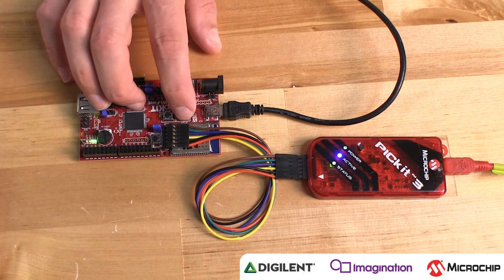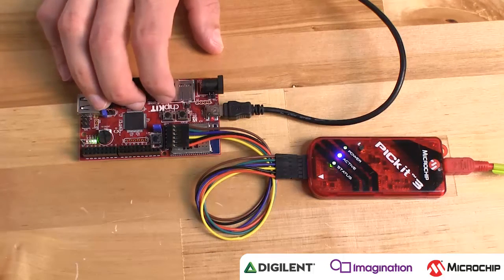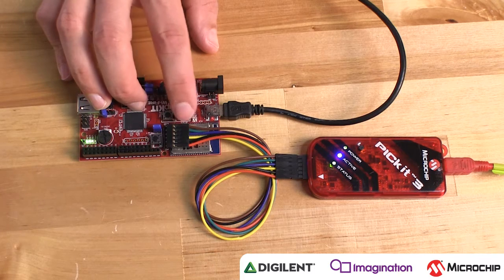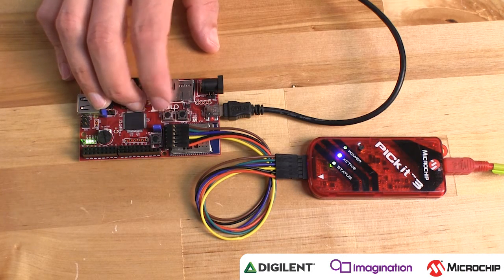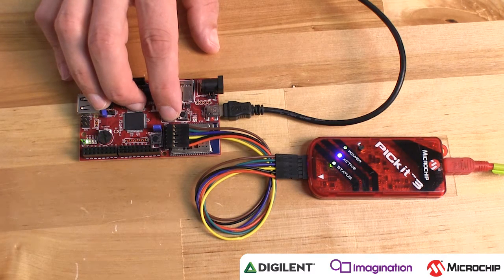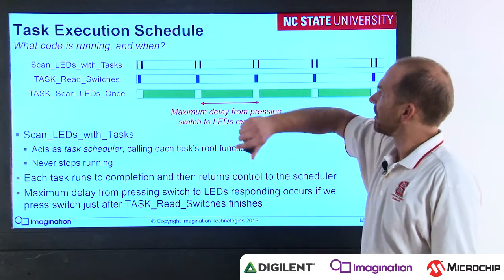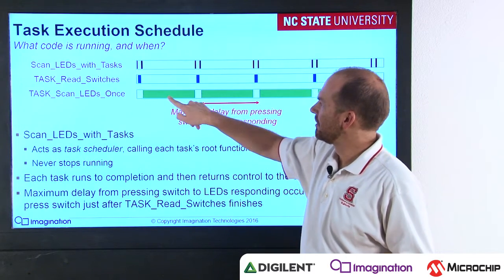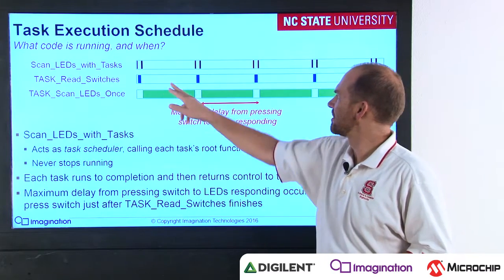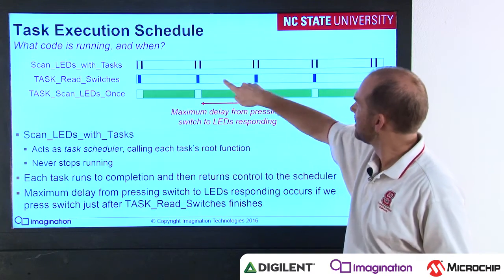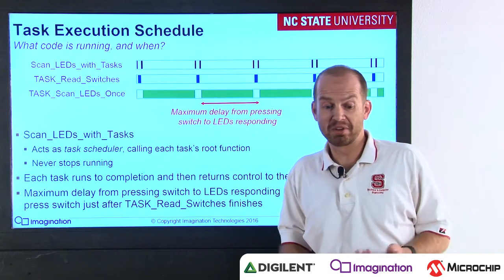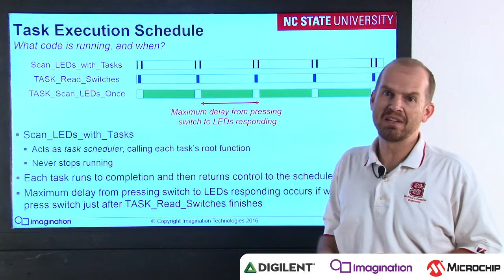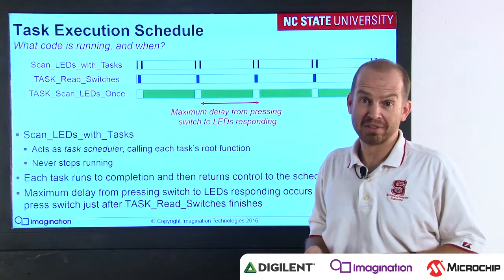If we press the first button, they'll scan quickly. If we press the second button, it'll turn off. But again, the switches aren't detected until after the LED scanner gets to the end of the scanning cycle, to the fourth LED. The tasks executing are read switches and scan LEDs once, and switches are only read between calls to scan LEDs once — that's why we have such a large potential delay. This performance isn't much better than the previous version, but this code is much easier to maintain and will serve as a building foundation for the next steps.